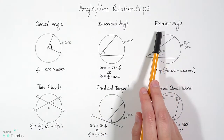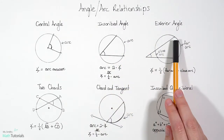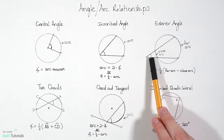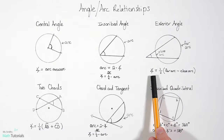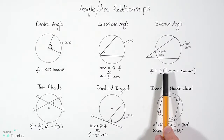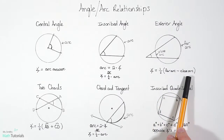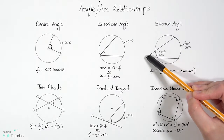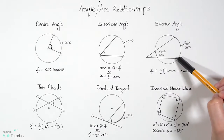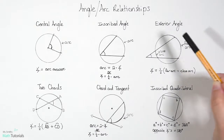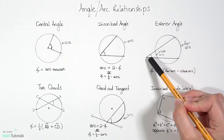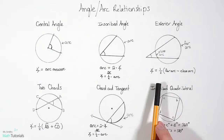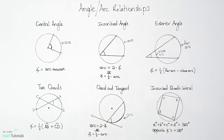The next one is the exterior angle. It's similar to the inscribed angle, but it extends outside of the circle — our angle measure is outside the circle. For this one, we find the angle measure by multiplying one half times the far arc minus the close arc. The far arc is the arc furthest from the exterior angle, and the close arc is the one closest to the angle. Take the far arc, subtract the close arc, multiply by one half, and that gives you the exterior angle.